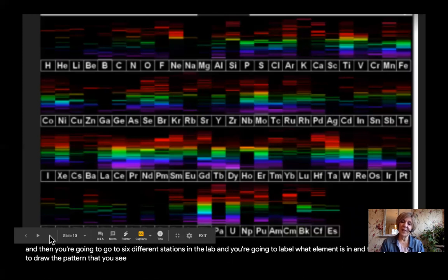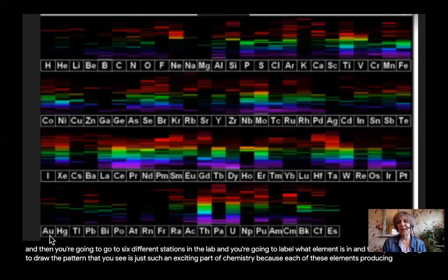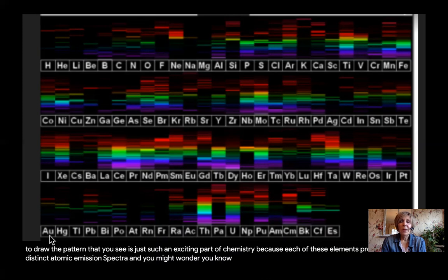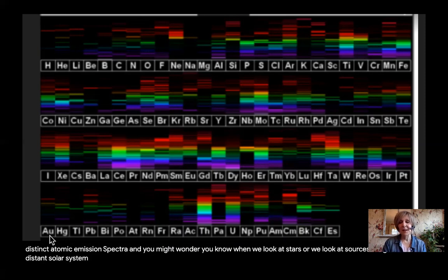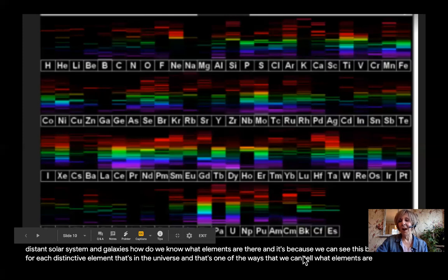So this is just such an exciting part of chemistry because each of these elements produce a very distinct atomic emission spectra. And you might wonder, when we look at stars or we look at sources of light in the distant solar system and galaxy, how do we know what elements are there? And it's because we can see this barcode of color for each distinctive element that's in the universe. And that's one of the ways that we can tell what elements are out there.